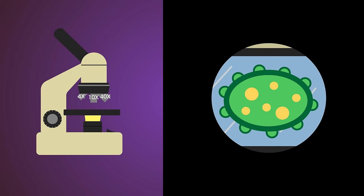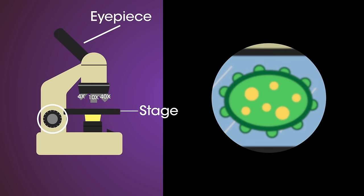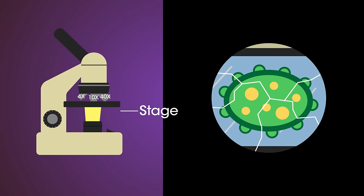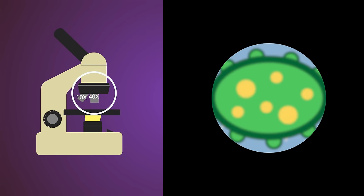If you look down the eyepiece lens, you will see the image. You will probably need to use the focusing knobs to move the stage up and down until the image is clear and not blurry. You must be careful when moving the stage up not to knock into the objective lens, as this might break it. Now you can choose a higher magnification objective lens to see the specimen in more detail.